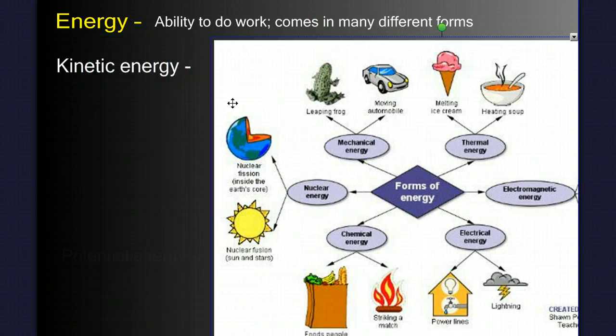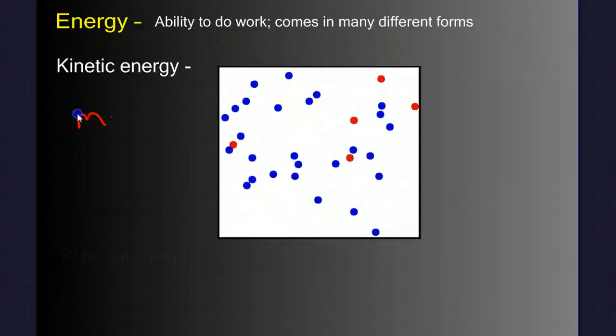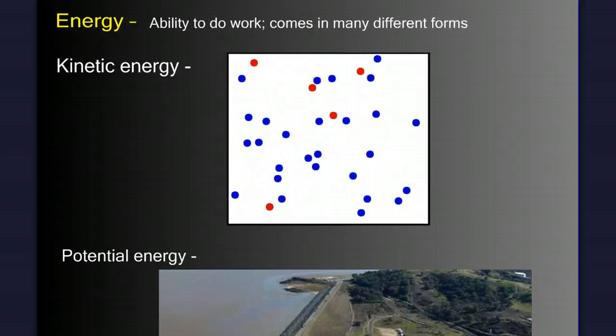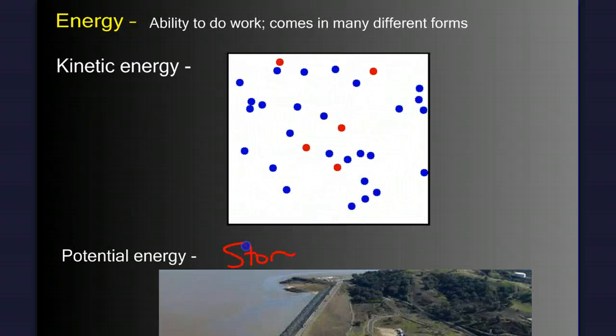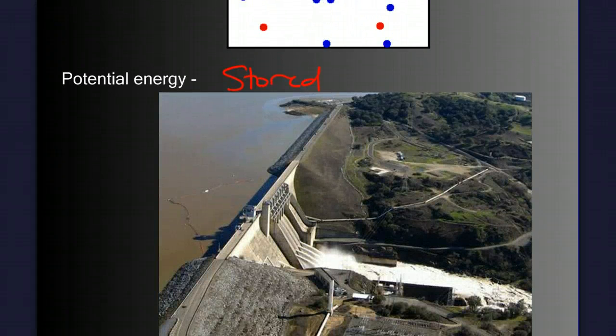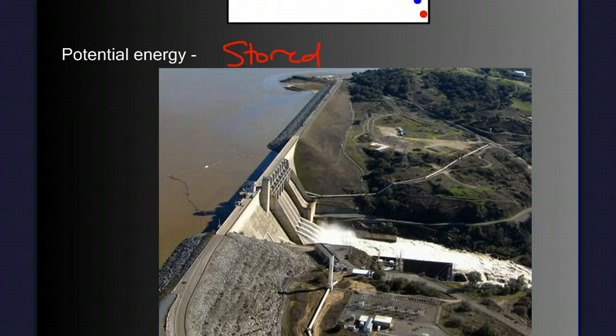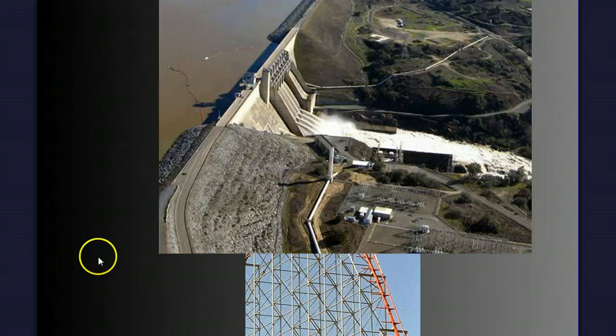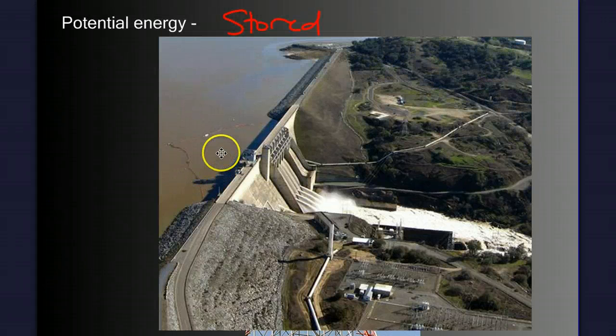Kinetic energy, which is the energy of motion. And potential energy, which is stored energy, like water behind this dam. It has the potential to do work. Potential energy can be converted into other forms of energy. The water moving through this dam is used to produce hydroelectric power.